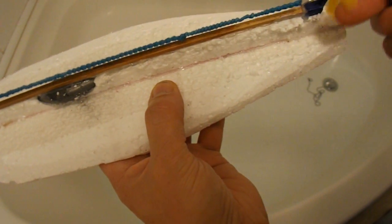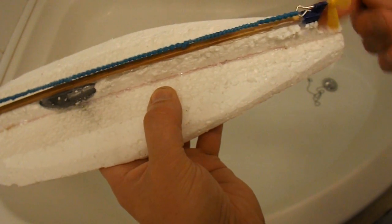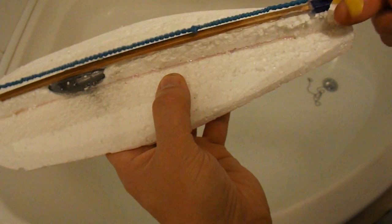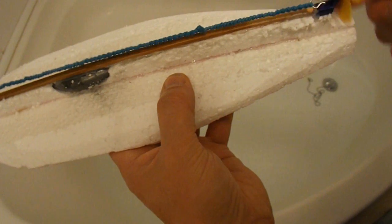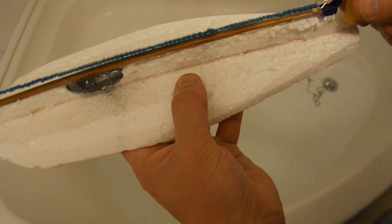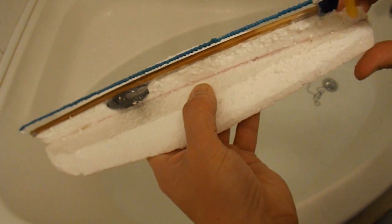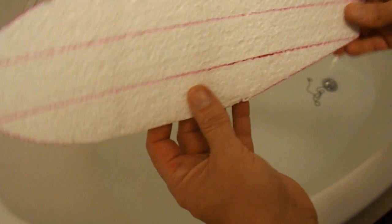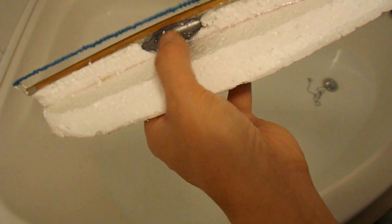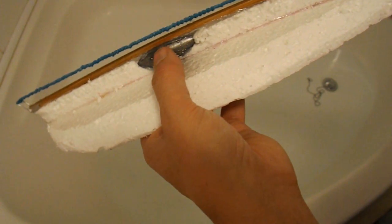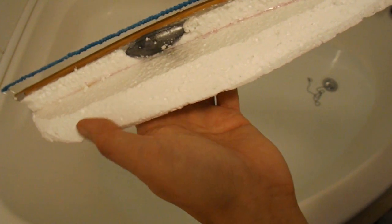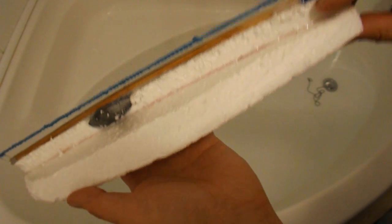Because all that will happen is the propeller will get caught up in the weed and I'll end up having to wade into the water or something to try and rescue it. So we'll put it in the bath and see how it goes. I've got to mention I've put a big lead weight there just to make sure it holds the boat down in the water to keep the propeller well in the water.